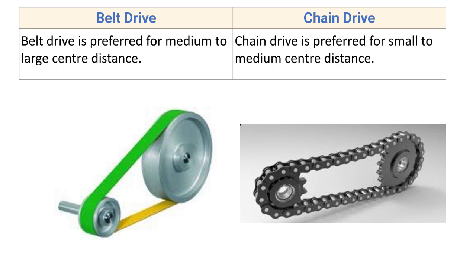Chain drive is preferred for small to medium center distance. If we want to transmit power over a large distance using chain drive, we would need a long chain, and chain is comparatively heavier than belt, which increases the overall system weight. Hence chain drive is preferred for small to medium center distances.